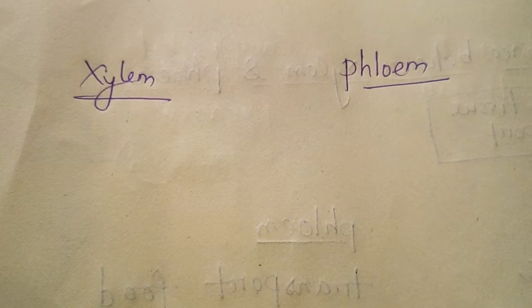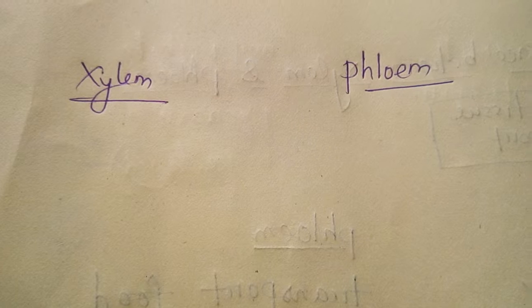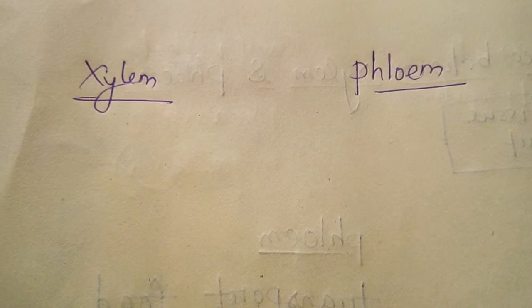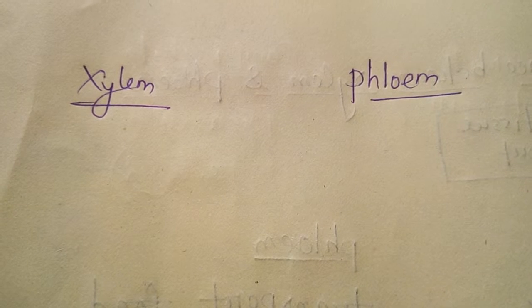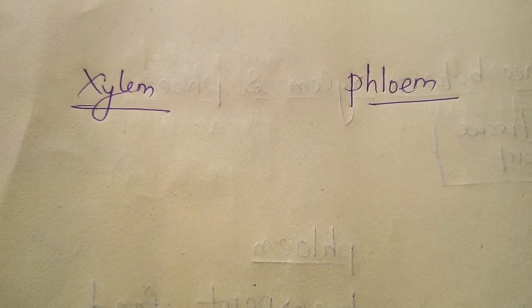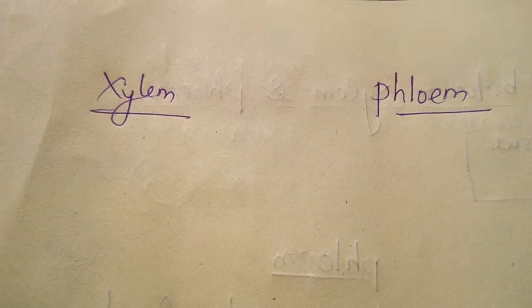Xylem and phloem consist of four types of cells. Xylem consists of tracheid cells, vessel cells, xylem parenchyma, and xylem fiber.